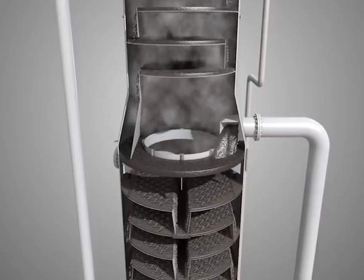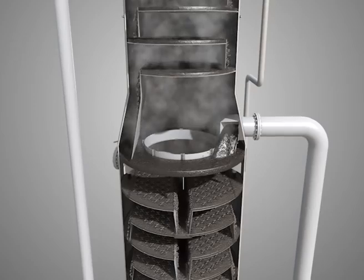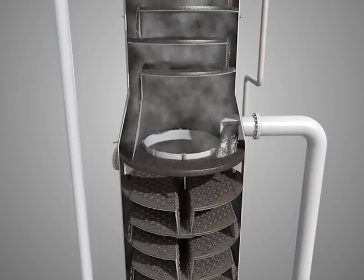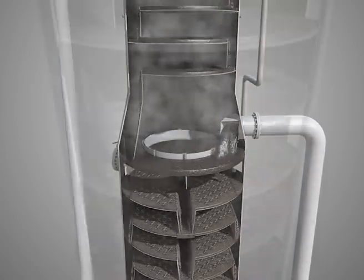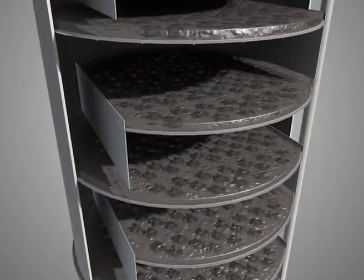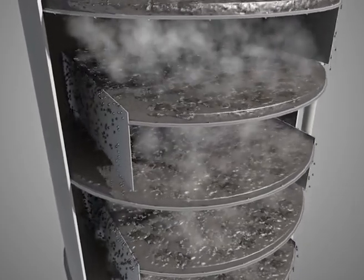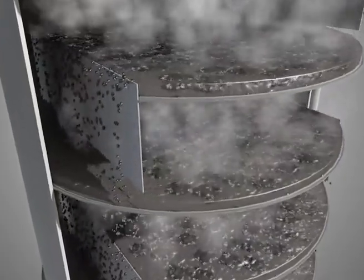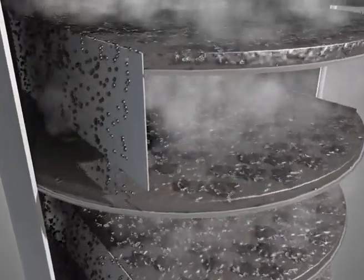Sieve trays, which are perforated thin plates, are very good in fouling applications or when there are solids present because they are easy to clean. However, the turndown—the performance when operating below the designed flow rate—is relatively poor.